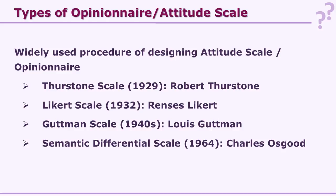Widely used procedures of scaling can be listed as four: Thurston scale developed by Robert Thurston in 1929; Likert scale developed by Rensis Likert in 1932; Guttmann scale developed by Louis Guttmann in the 1940s; and Semantic Differential scale developed by Charles Osgood in 1964. We will see these in detail as they are widely used by researchers.